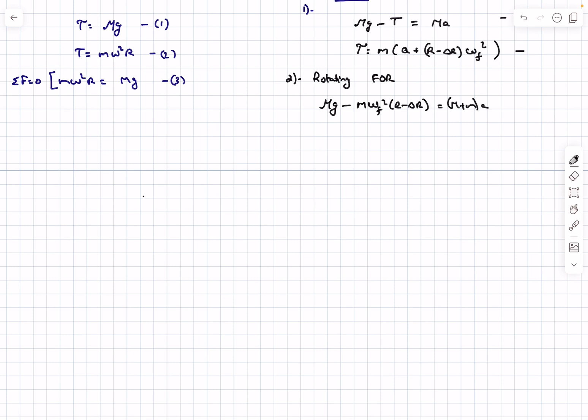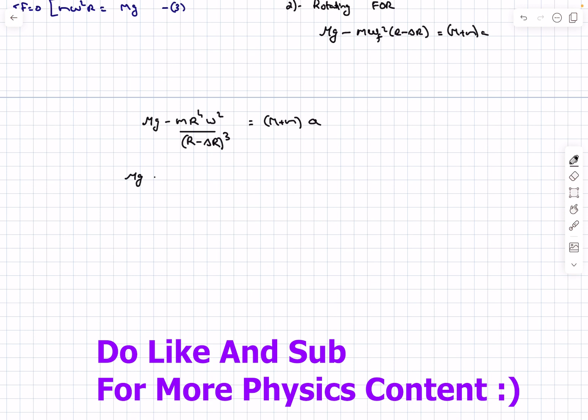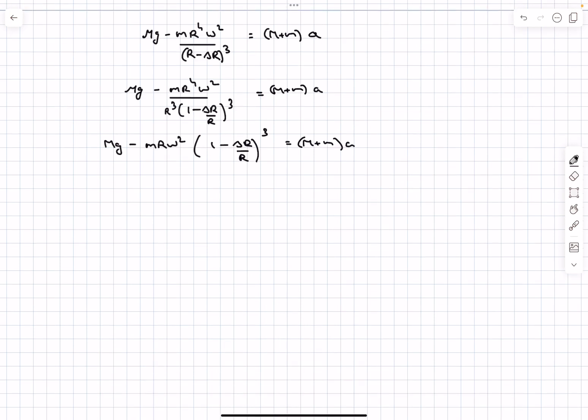Anyway, so now let's continue with our calculation. So omega final, we obtain the value for it above. Now I can take R common from the denominator so it will be R cubed. So this is what we end up with.